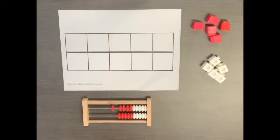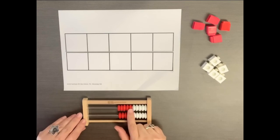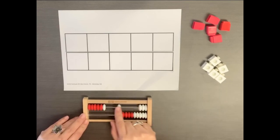When students model a quantity such as 8 on the Rekenrek, slide 5 and then count on: 6, 7, 8.